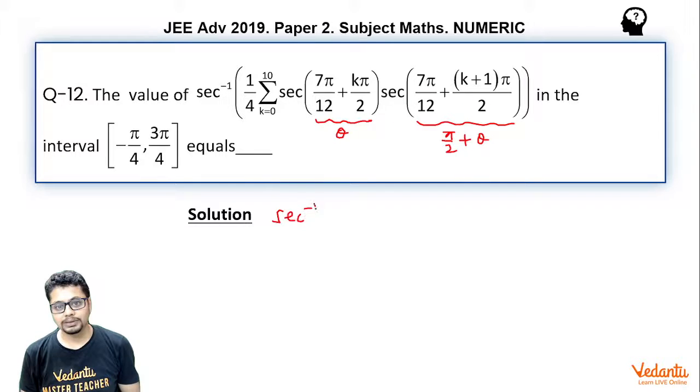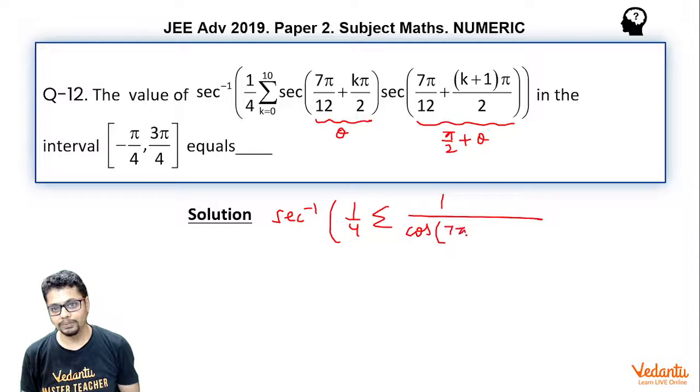That means sec inverse 1 by 4 sigma 1 by sec is 1 by cos. So, it essentially becomes cos 7 pi by 12 plus k pi by 2.